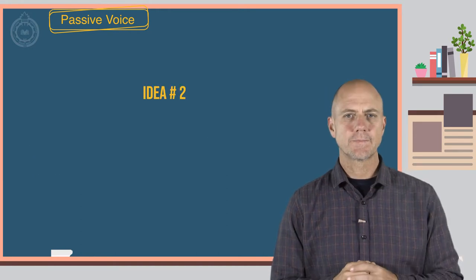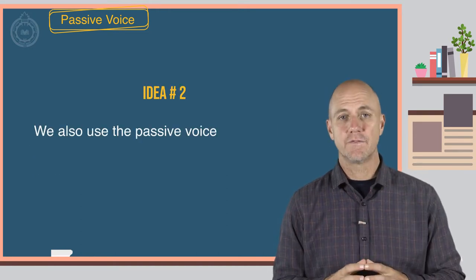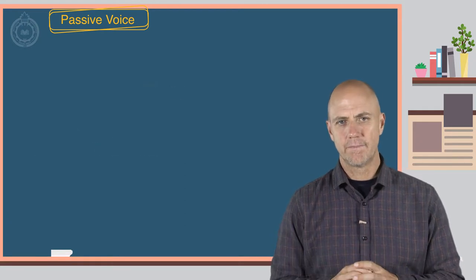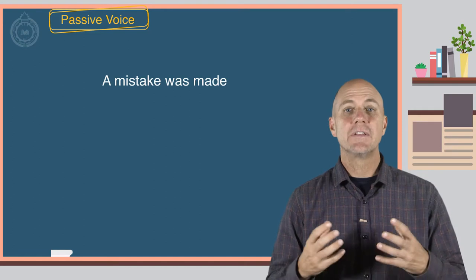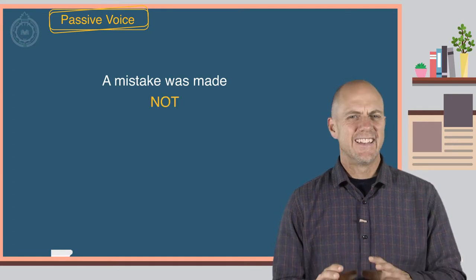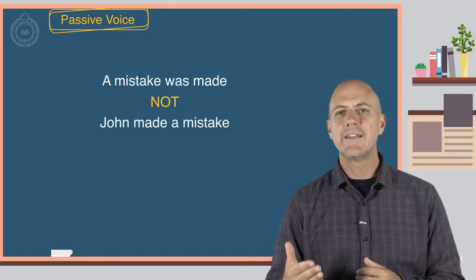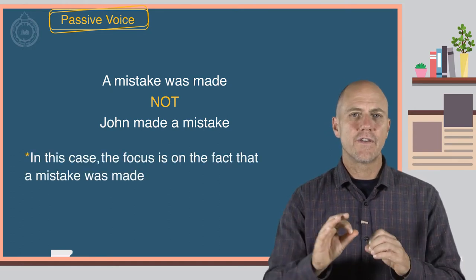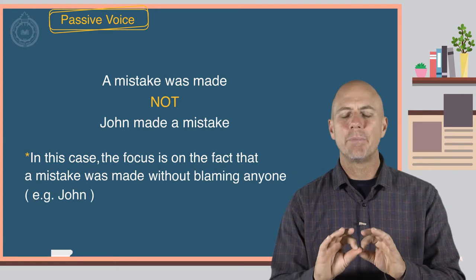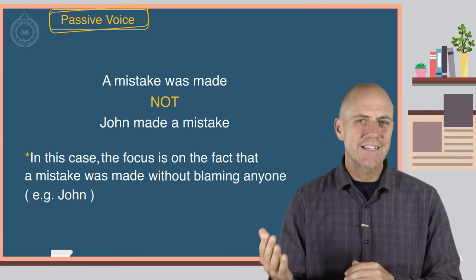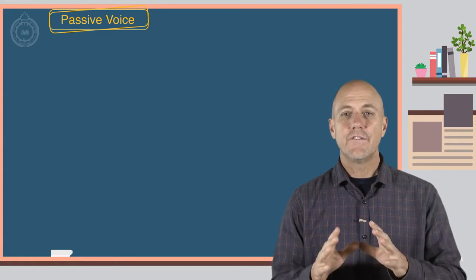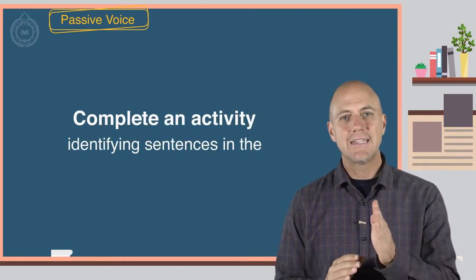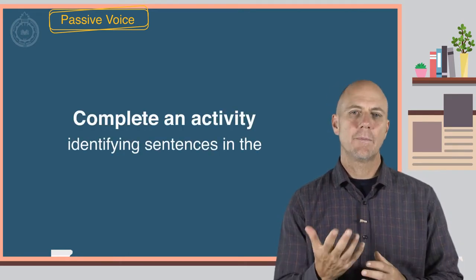Idea number two. We also use the passive voice to be polite and not offend someone. A mistake was made, not John made a mistake. In this case, the focus is on the fact that a mistake was made without blaming anyone, like John. The video will now stop and you will complete an activity identifying sentences in the passive voice.